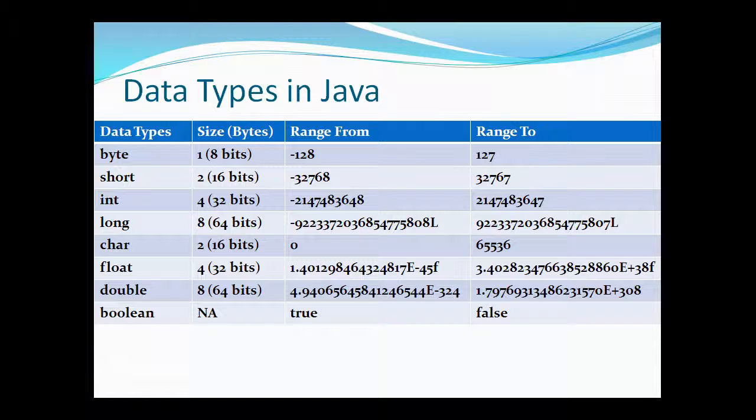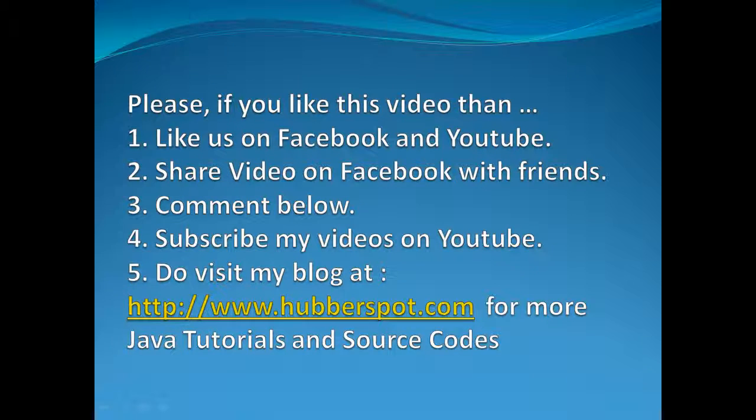The boolean data type has no size. In different programming languages like C and C++, the boolean type holds the value 0 or 1 for true or false, but here in Java it holds only two literal values: true and false. So friends, these were the eight primitive data types in Java.